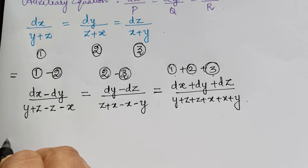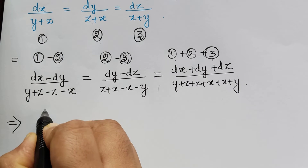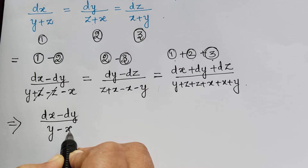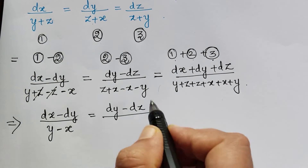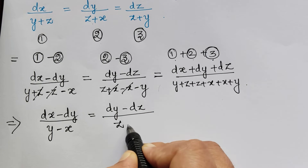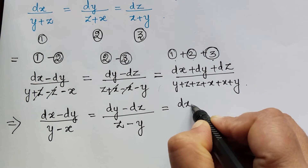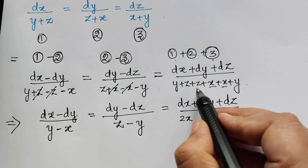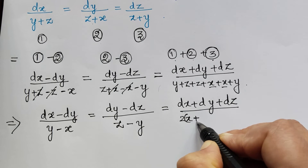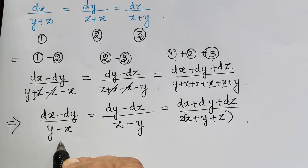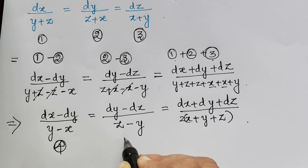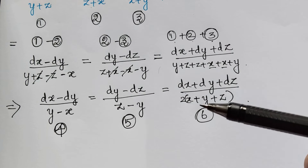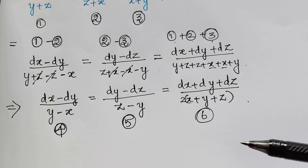Simplifying: the z terms cancel in the fourth ratio to give dx minus dy divided by y minus x. The x terms cancel in the fifth to give dy minus dz divided by z minus y. In the sixth, the denominator becomes 2x plus 2y plus 2z, so factoring out 2 gives dx plus dy plus dz divided by 2 times x plus y plus z. Let us mark these new ratios as 4, 5, and 6. This is the method — we perform operations to form new ratios and compare them.